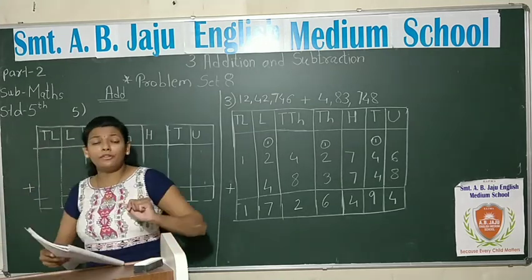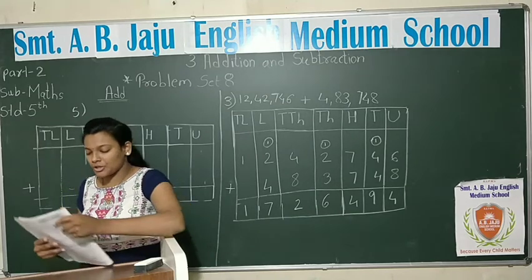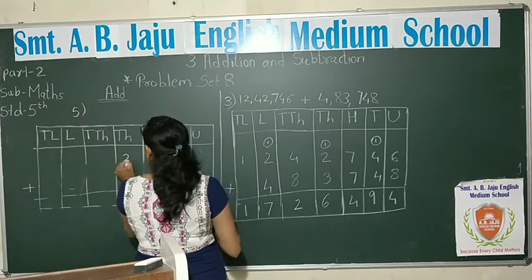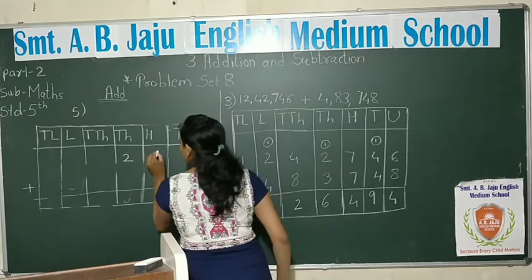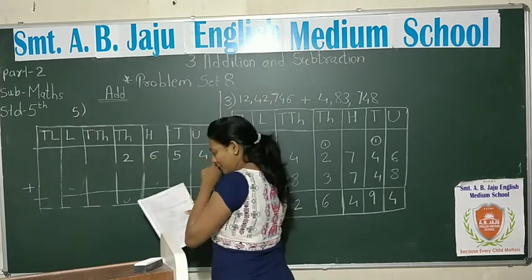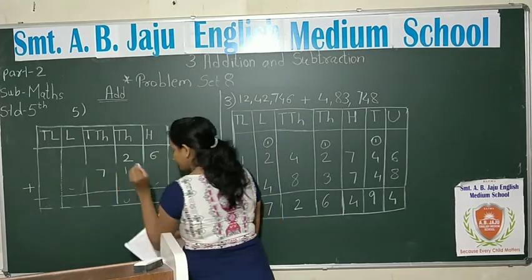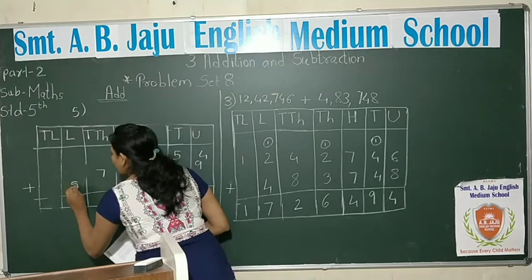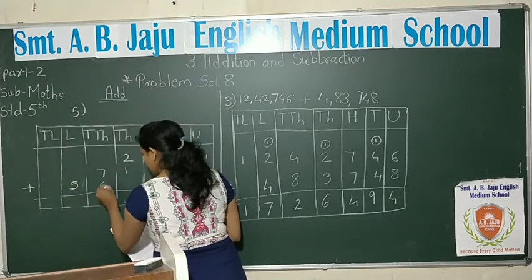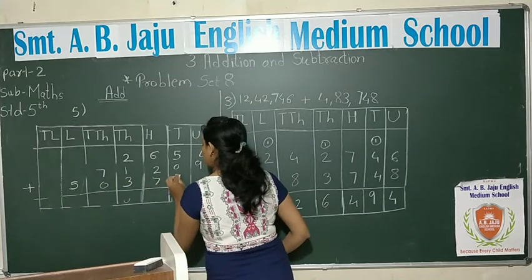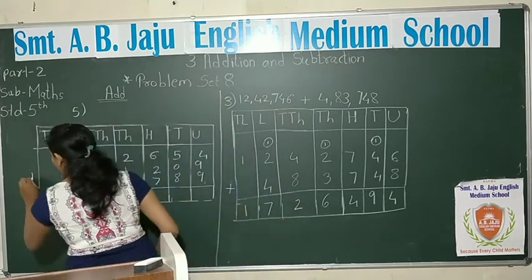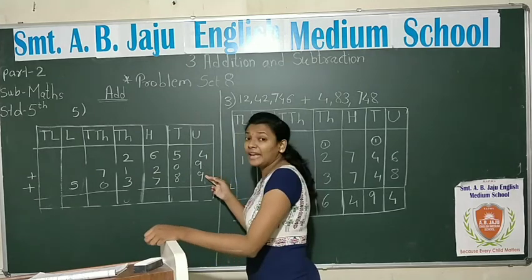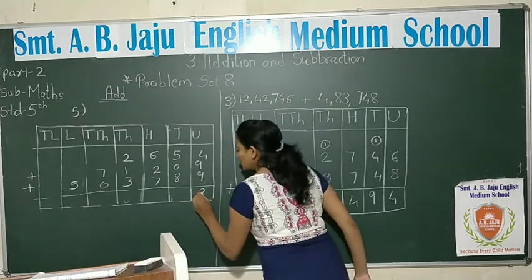We will give you three numbers to add. The three numbers are: 2,654 plus 71,209 plus 3,789. So students, when 3 numbers are given, there are 2 addition signs. Let's start: 9 plus 9 is 18, 18 plus 4 is 22, write 2, carry 2.